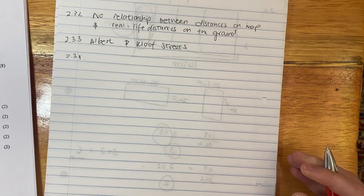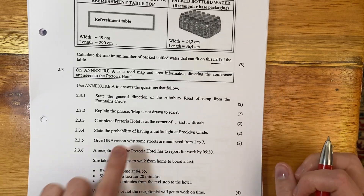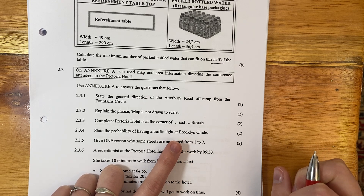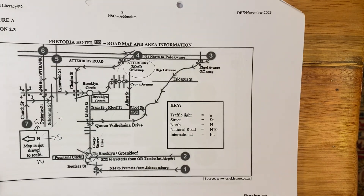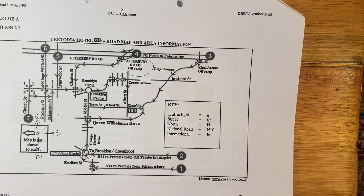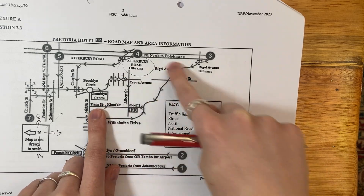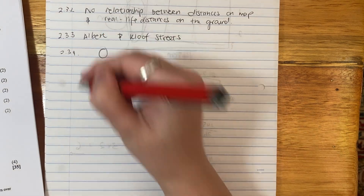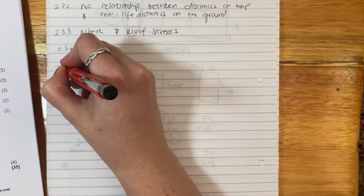State the probability of having a traffic light at Brooklyn Circle. When you read that, even without looking at the map, you know — we don't have traffic lights at circles. So the probability is probably going to be zero. This circle is literally one of those where people flow around it; there's never a traffic light — you just go around the circle yielding to your right. So the answer is zero. We do not put traffic lights at circles. That's a little bit of common sense.